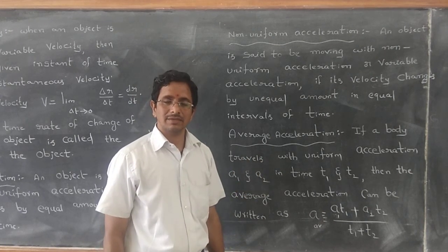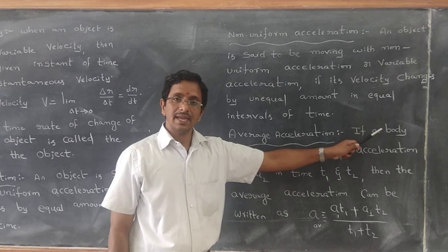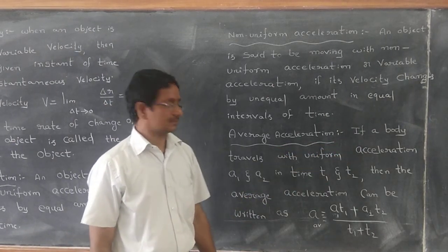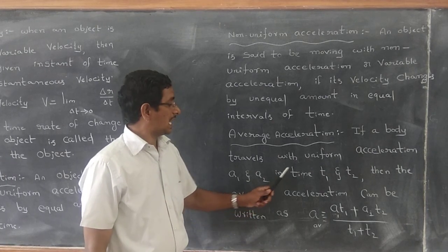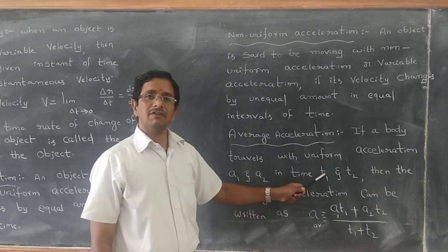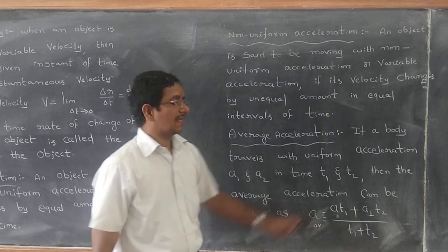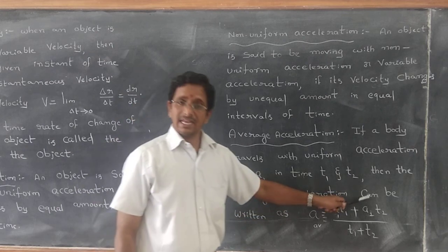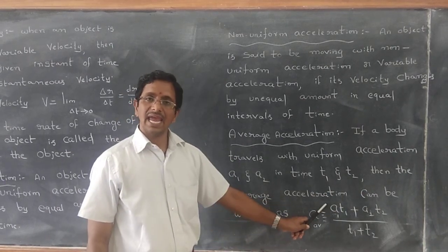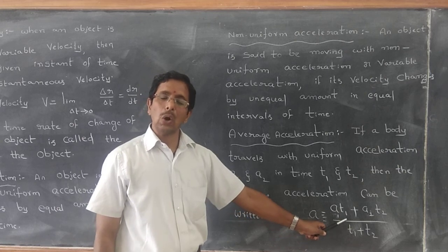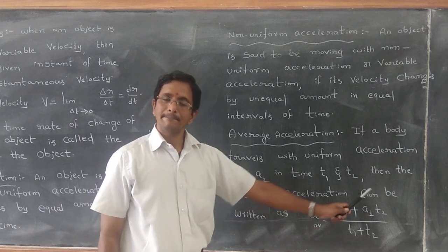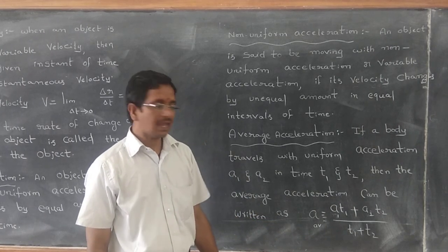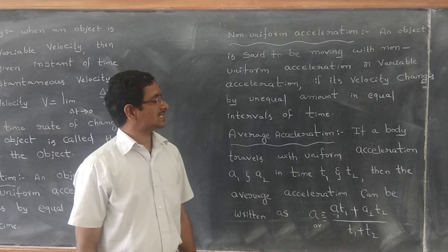Average Acceleration: If a body travels with accelerations a1 and a2 in times t1 and t2, then the average acceleration can be written as: a_av equals (a1·t1 + a2·t2) divided by (t1 + t2). That is the average acceleration.